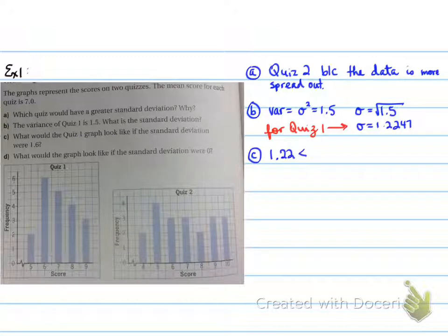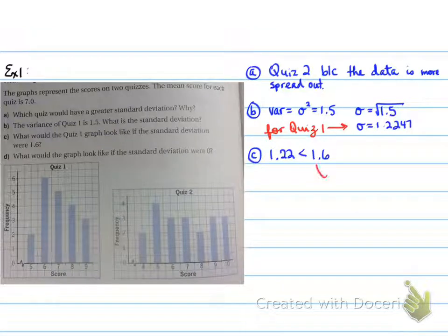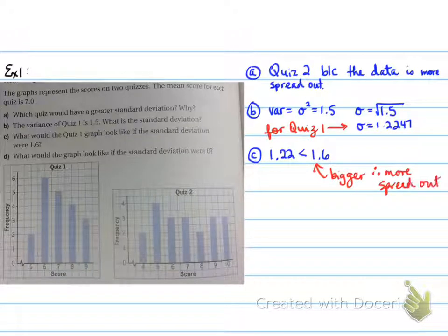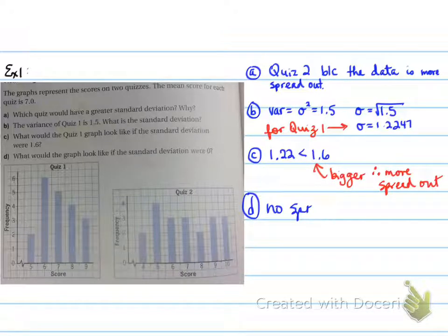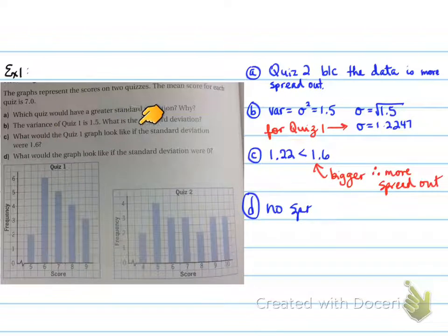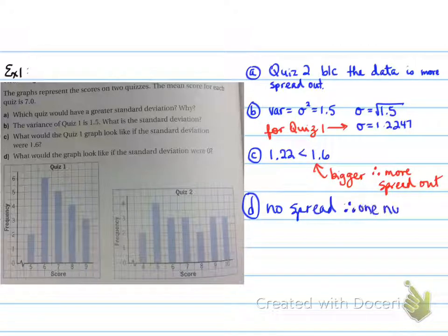What would the quiz one graph look like if the standard deviation were 1.6? Since 1.22 is smaller than 1.6, the graph would be more spread out because 1.6 is larger than 1.22. What would the graph look like if the standard deviation were 0? If the standard deviation were 0, there would be no spread, so all the data would represent one number — the mean of 7.